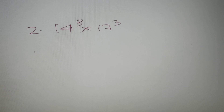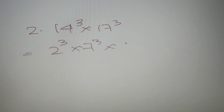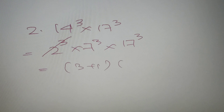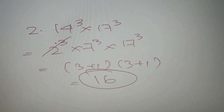According to our second question, we have to find the number of odd factors for 14³ × 17³. We write this in prime factorized form: since 14 = 2 × 7, this becomes 2³ × 7³ × 17³. Now we exclude all the powers of 2 and apply the formula: (3+1) × (3+1) = 4 × 4 = 16. So the number of odd factors for 14³ × 17³ is 16.